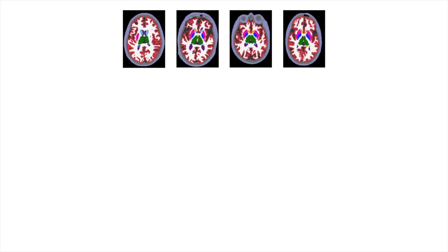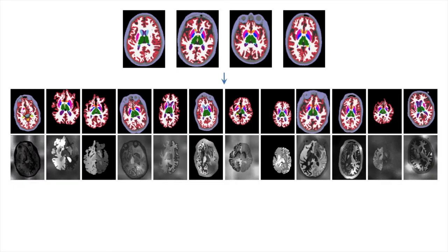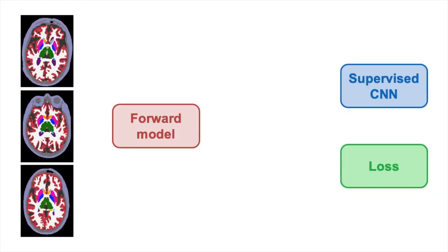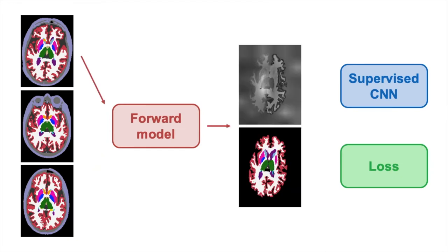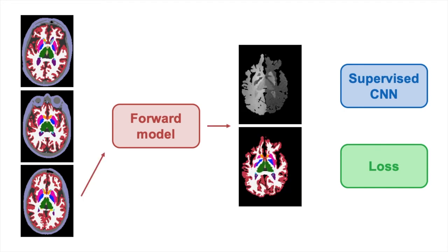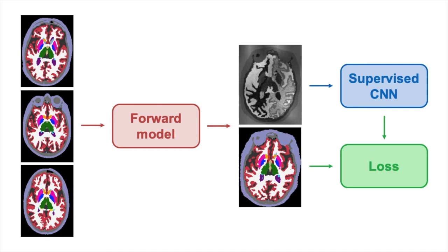These scans are produced using a generative model where we randomly sample all parameters, including the image contrasts. Crucially, the data generation happens on the fly, such that each mini-batch has a different contrast, and thus the final network is not biased towards any specific modality.